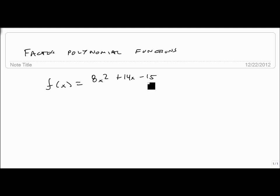It's not a perfect square trinomial, so we take 8 times minus 15 and get minus 120, which we break down as minus 2 and 60, which doesn't work. Minus 4 and 30, minus 8 and 15, none of which work.